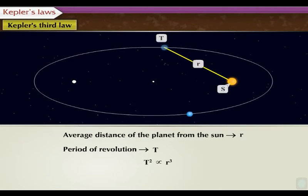That is, T square upon R cube is equal to the constant which is equal to K. This is equation 1.